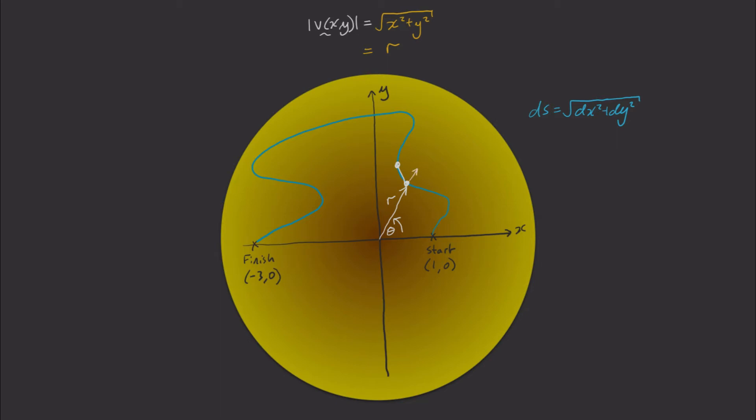Using this coordinate system, ds will have a radial component, dr, and a perpendicular component, r d theta, meaning that ds can also be written as this term, the square root of dr squared plus r d theta squared.